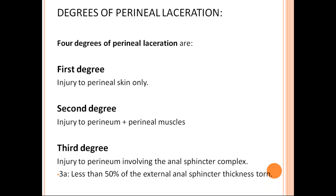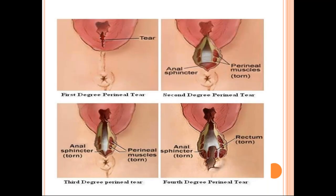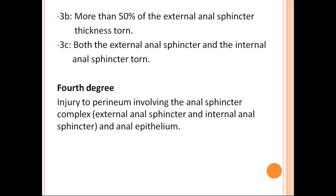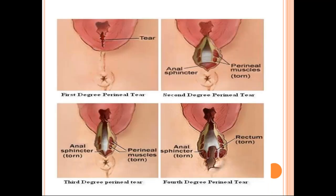Third degree: injury to the perineum involving the anal sphincter complex. 3A — less than 50% of the external anal sphincter is torn. 3B — more than 50% of the external anal sphincter is torn. 3C — the internal anal sphincter is also involved. Fourth degree: injury to the perineum involving the anal sphincter complex and anal epithelium — a through-and-through laceration joining the vagina and rectum, involving all layers including the anal epithelium.